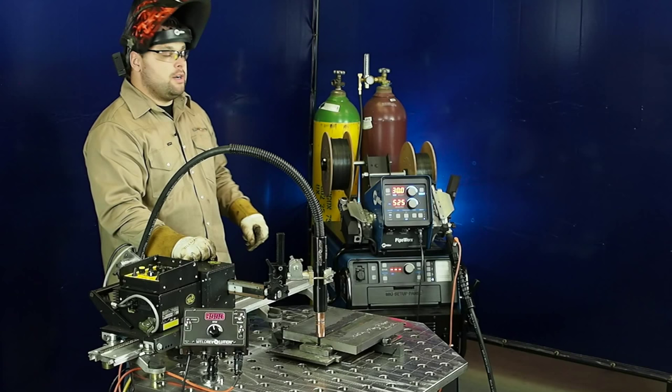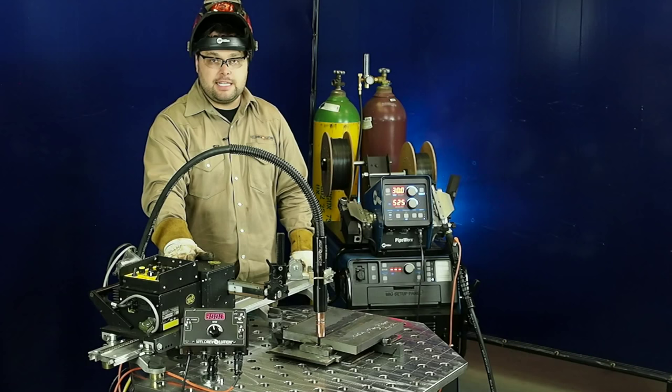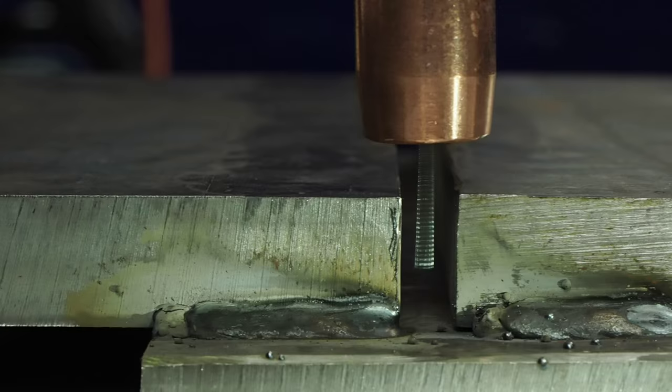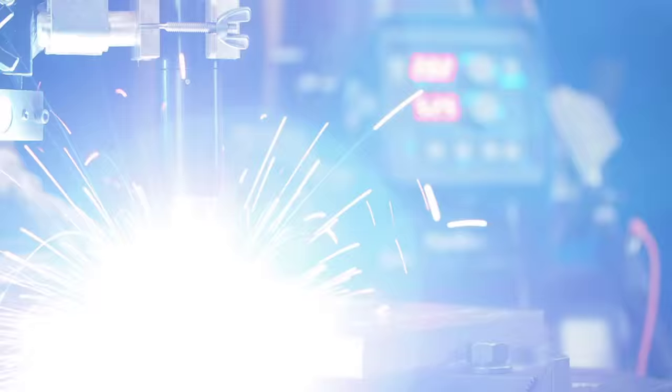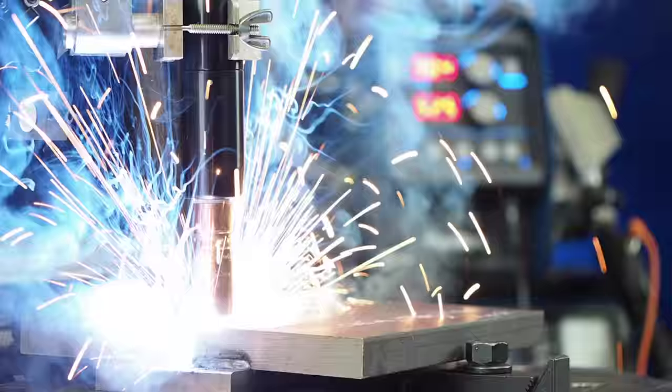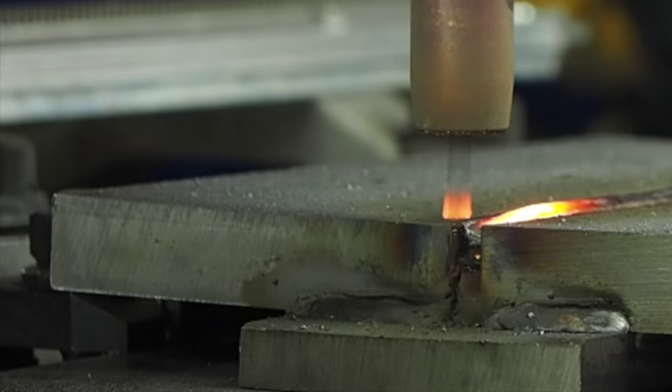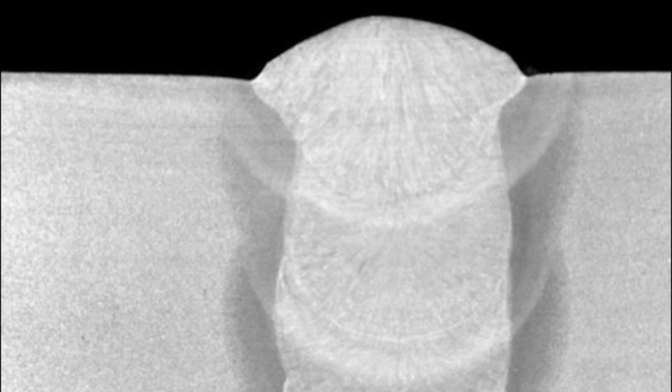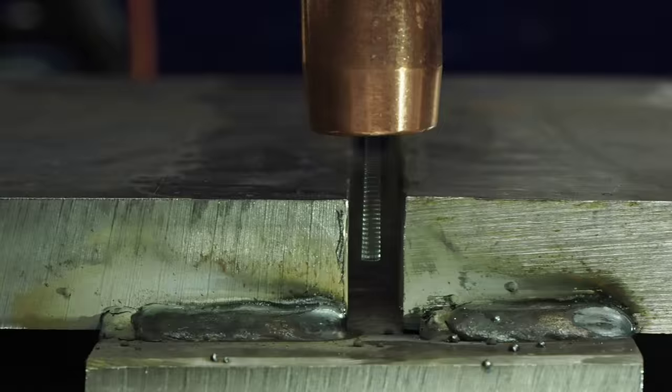We're going to be running a number three for the spin diameter at 3000 RPM. For the wire feed speed, we're going to be running 525 inches a minute and 30 volts. On the travel speed, it'll be 17 and a half. So everything's ready. We're going to make a weld.